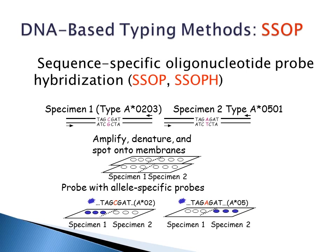Here is a schematic of the SSOP method where you have two different specimens that are different types. You're going to amplify, denature, and spot onto your membranes. Then you're going to probe with your allele-specific probes onto your various membranes and see what lights up, which means you have hybridization between the probe and your amplicon.